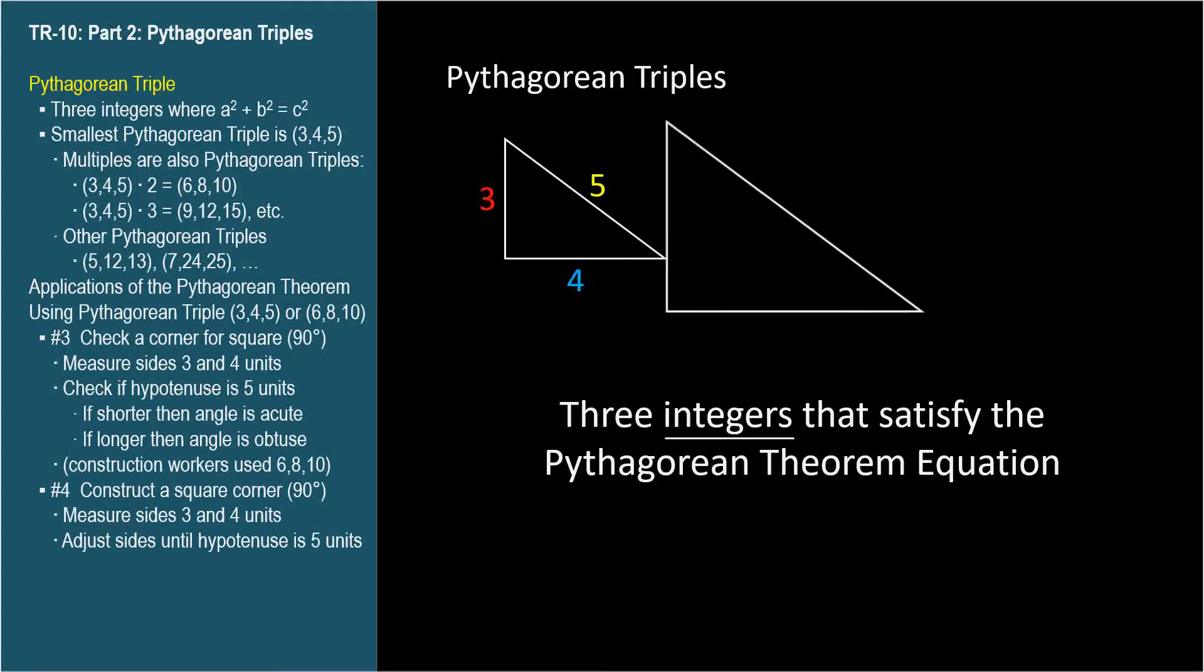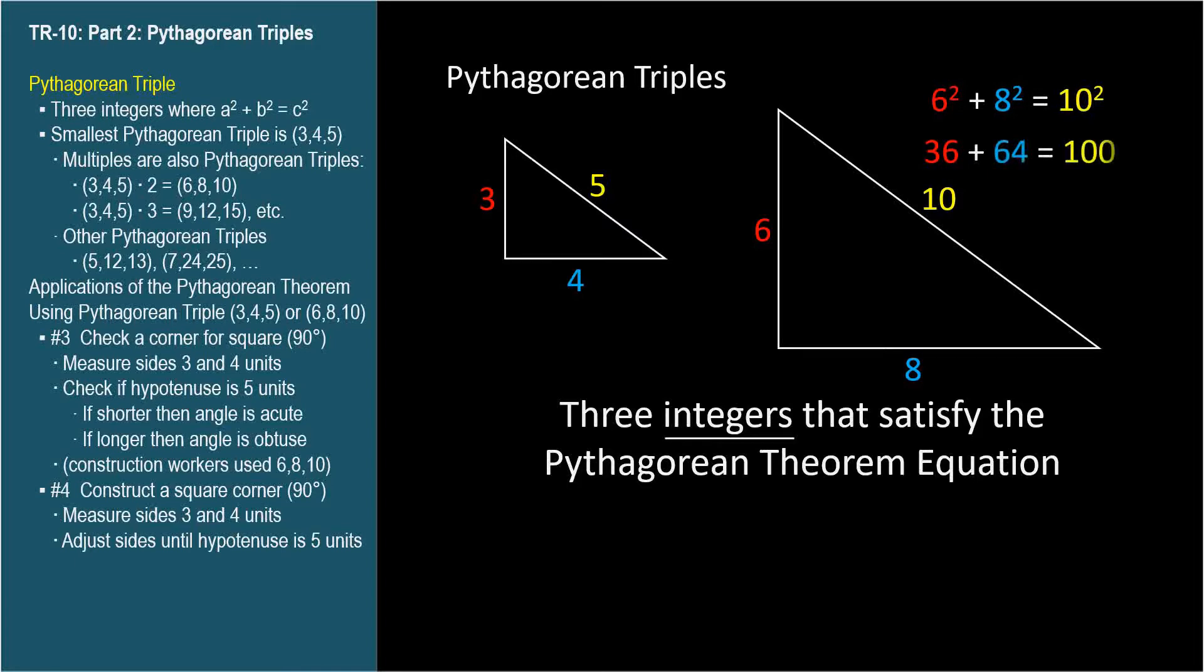If we scale up a Pythagorean triple by an integer multiple, then the new larger triangle will be similar to the initial right triangle. Remember, corresponding sides of similar triangles are proportional. The larger triangle will also be comprised of Pythagorean triples.